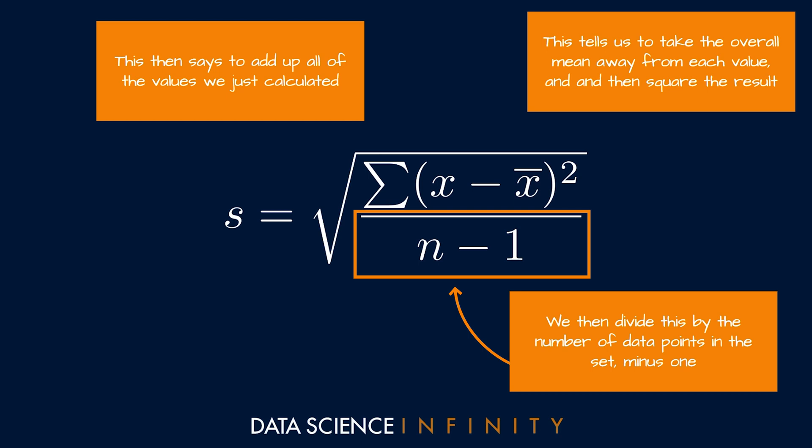Intuitively, you'd think we'd just divide by the number of data points, but here I'm saying that we should divide by the number of data points minus one. Why?